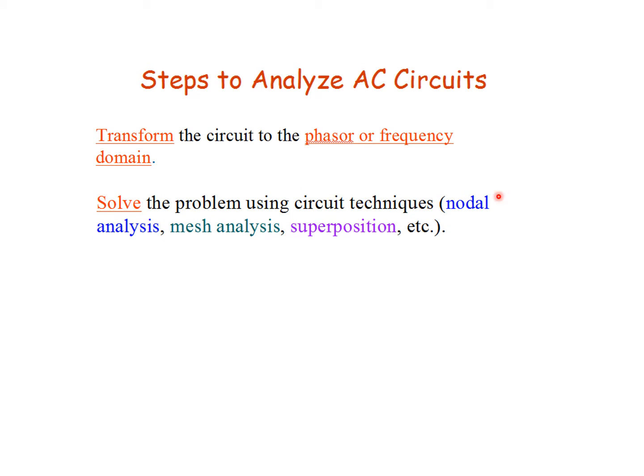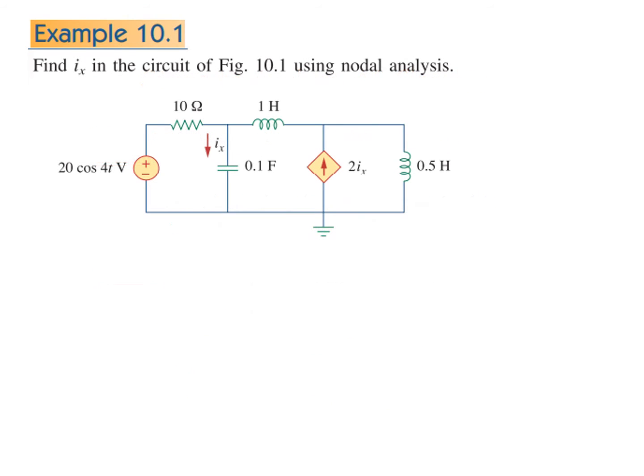Then we solve the circuit by any technique—here we will solve it by nodal method. After we have the answer, we transform from phasor to time domain. So this is the sequence: time to frequency conversion, solving the circuit, and then frequency to time conversion. Let's discuss example 10.1 which is solved in the book.